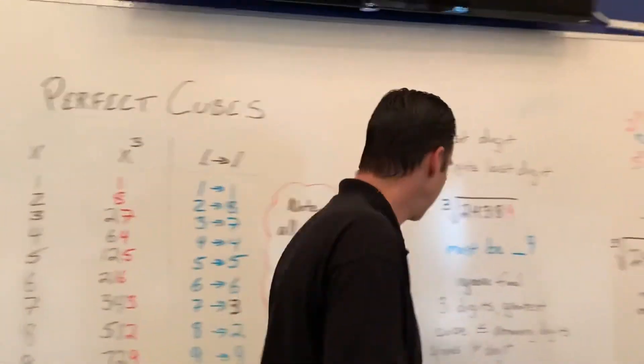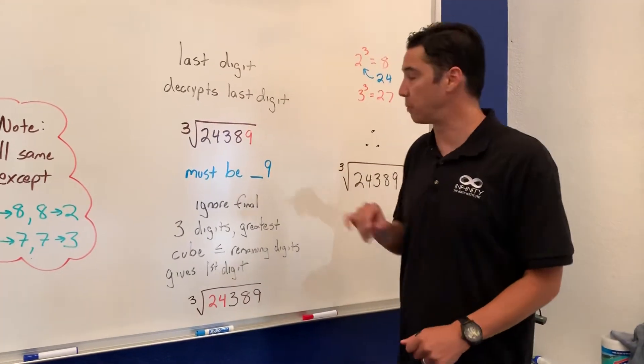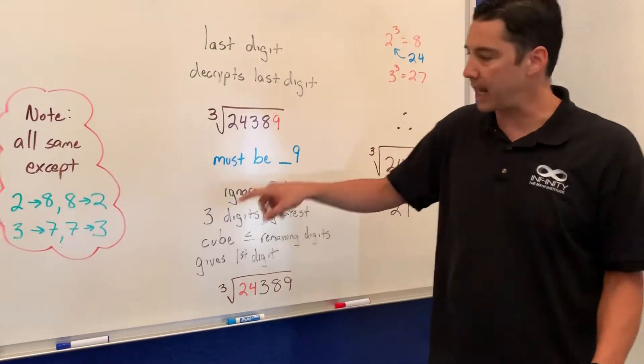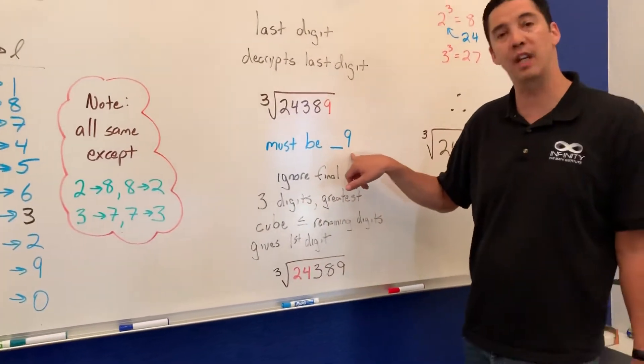Now here's the trick. The first thing you want to do is you want to look at the last number of the perfect cube, the 9. We know that 9 corresponds with 9. Therefore the last number is going to be 9.